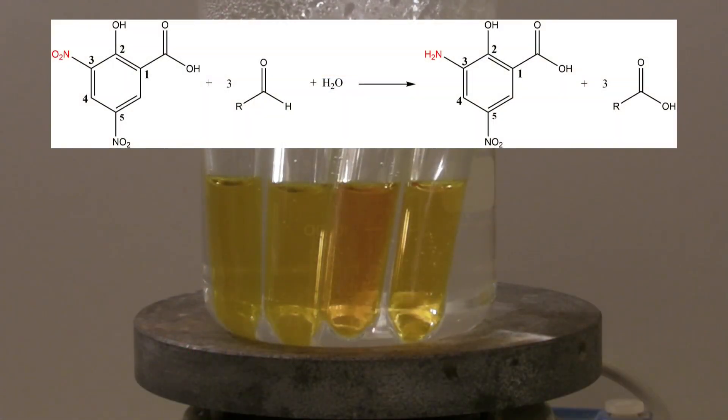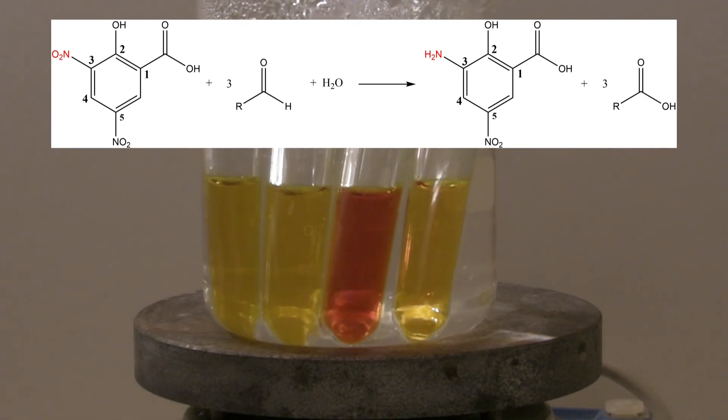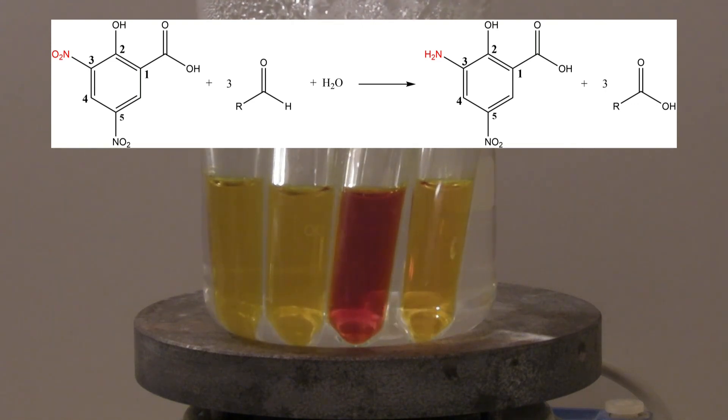The following reaction takes place. The nitro group on the third carbon is reduced to an amine group by reducing compounds. As an example for the latter, an aldehyde is used. The product is 3-amino-5-nitro-salicylic acid, which has a red color.